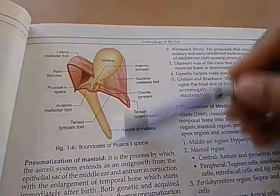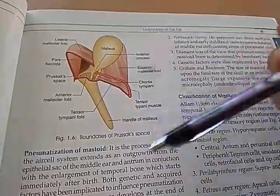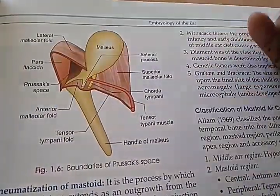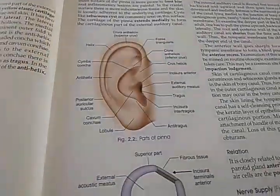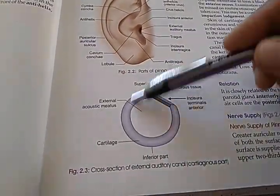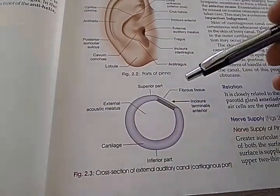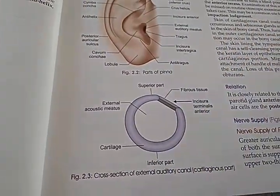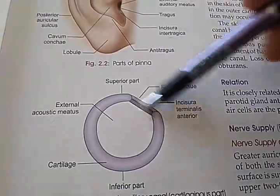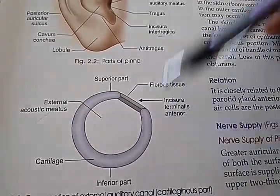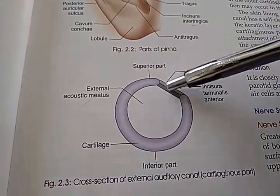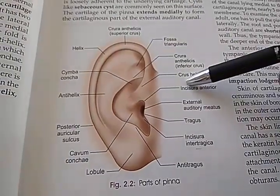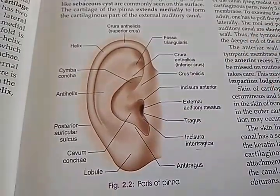In the embryology of the ear, they are talking about the boundaries of the Prussak space. Here you have the malleus and the handle of malleus. They are showing the cross section of the external auditory canal, the cartilage in this part. Here they are showing the incisura terminalis anterior — basically here the cartilage is absent, replaced by fibrous tissue.